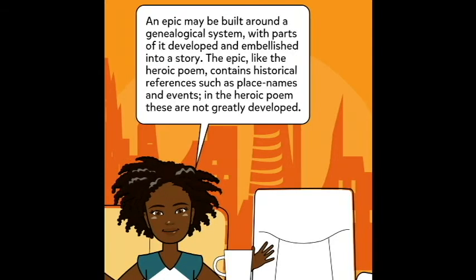The epic may be built around a genealogical system, with parts of it developed and embellished into a story. The epic, like the heroic poem, contains historical references, such as place names and events. In the heroic poems, these are not greatly developed.